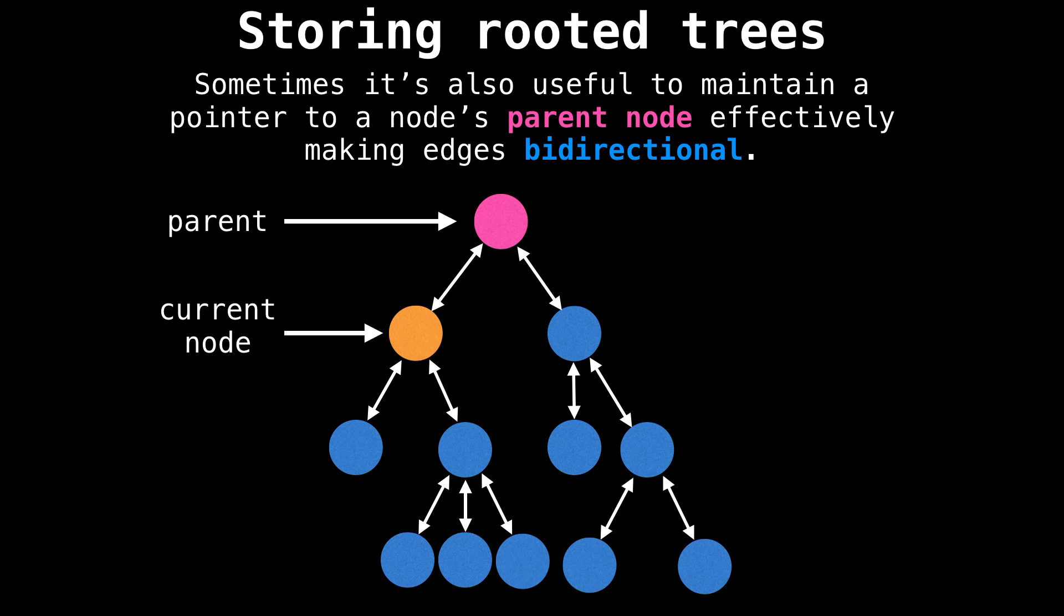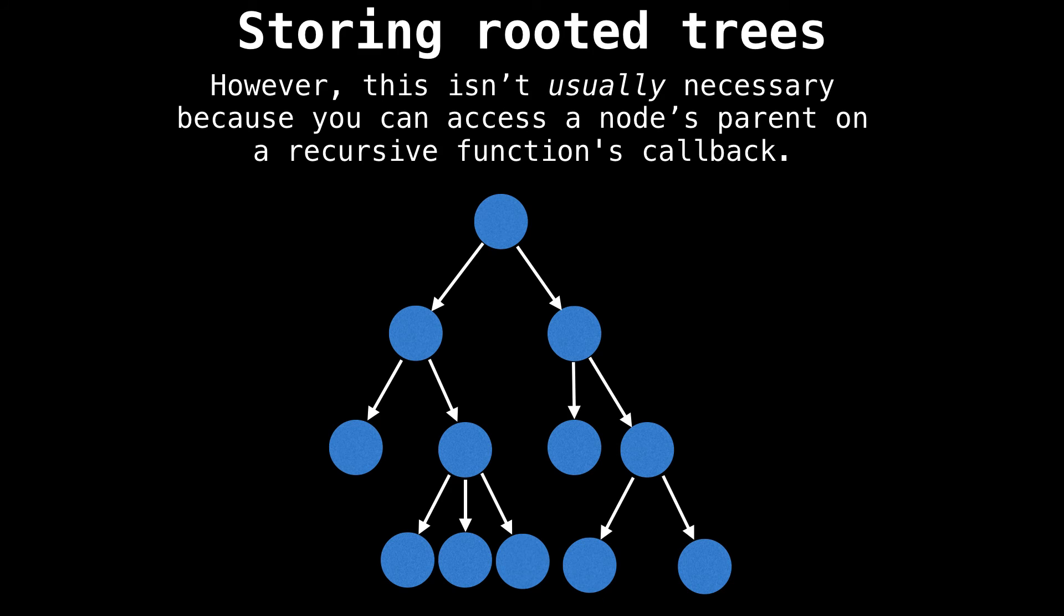Again, if the current node is the orange node, then the pink node in this case is the parent node of the orange node. However, maintaining an explicit reference to the parent node isn't usually necessary because you can access a node's parent on a recursive function's callback as you pop frames off the stack.